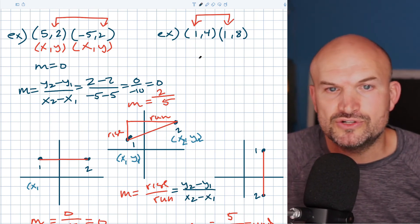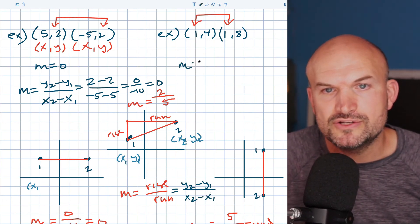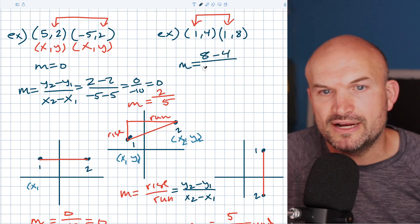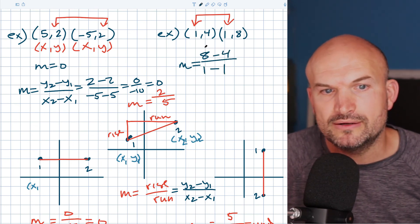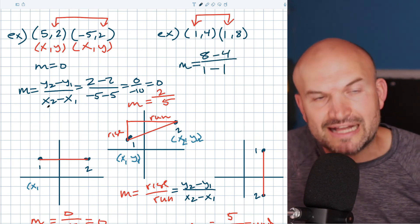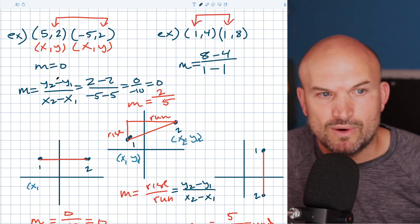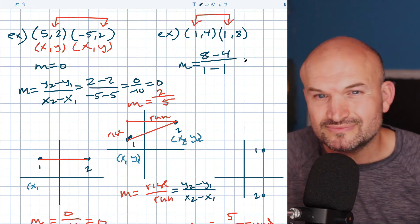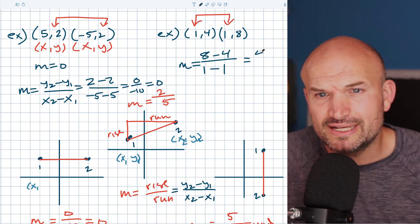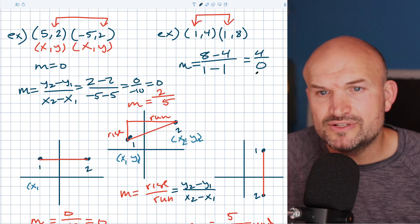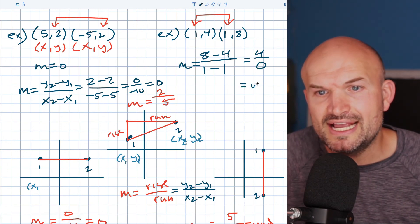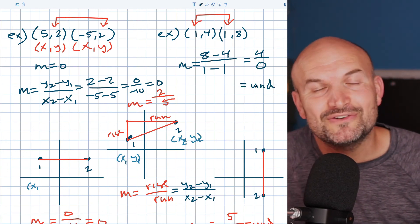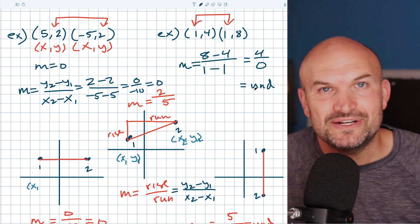Let's go through the motions: M equals eight minus four all over one minus one. Following the formula — subtracting Y coordinates and subtracting X coordinates — we get four over zero, which equals an undefined slope. So therefore that's it. Look forward to seeing you in the next video.